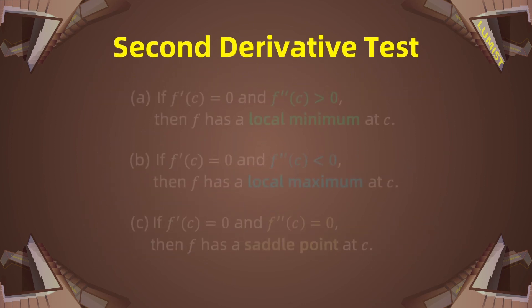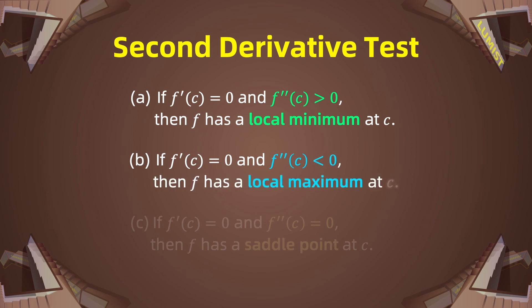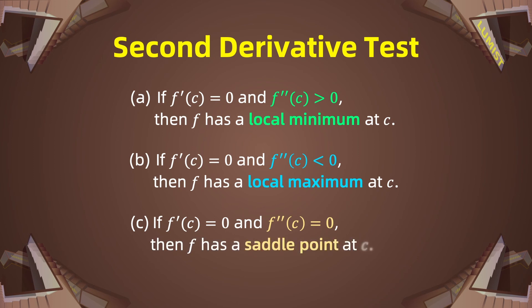We also have the second derivative test to check if a critical point is a local maximum, local minimum, or saddle point. Suppose the second derivative of f is continuous near point c. If f'(c) equals 0 and f''(c) is greater than 0, then f has a local minimum at c. If f'(c) equals 0 and f''(c) is less than 0, then f has a local maximum at c. And if f'(c) equals 0 and f''(c) equals 0, then f has a saddle point at c.